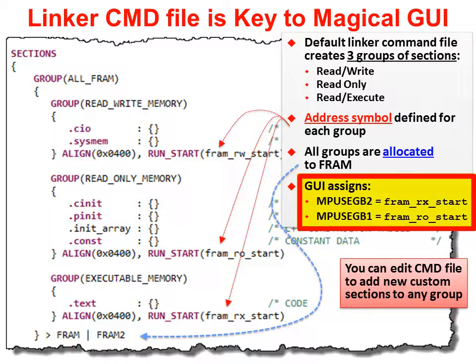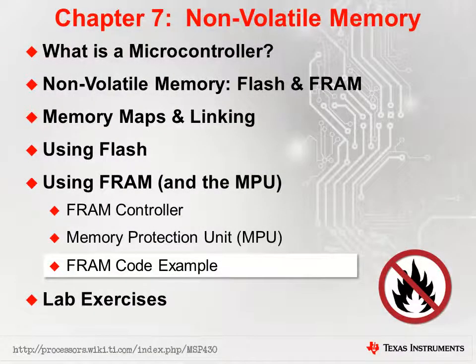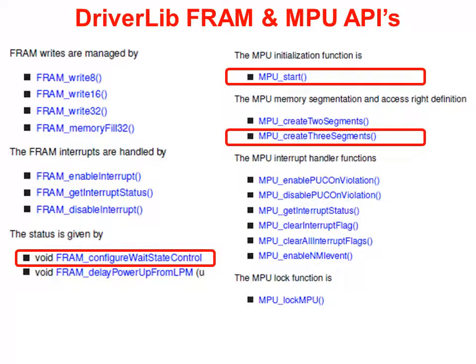It just assigns two of these symbols to the memory segment registers and it all automatically works. And if you want to manage the FRAM initialization manually — that is, in your own code — let's look at an example. We just need to write a configuration function that uses DriverLib function calls. Just like the GUI, we can use the global symbols created by TI's linker command file.